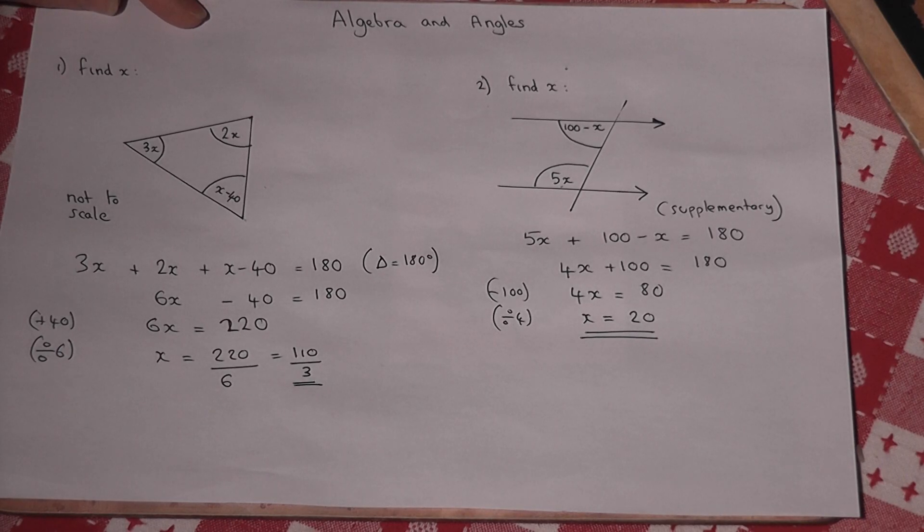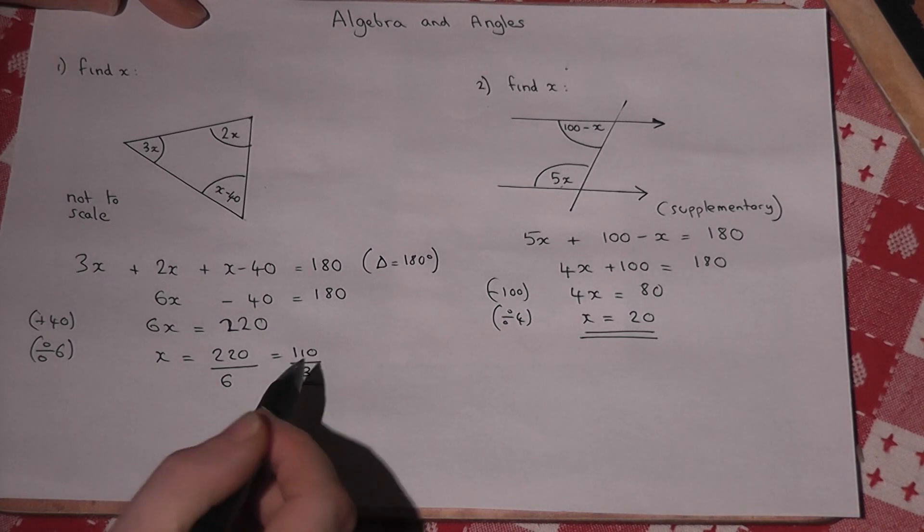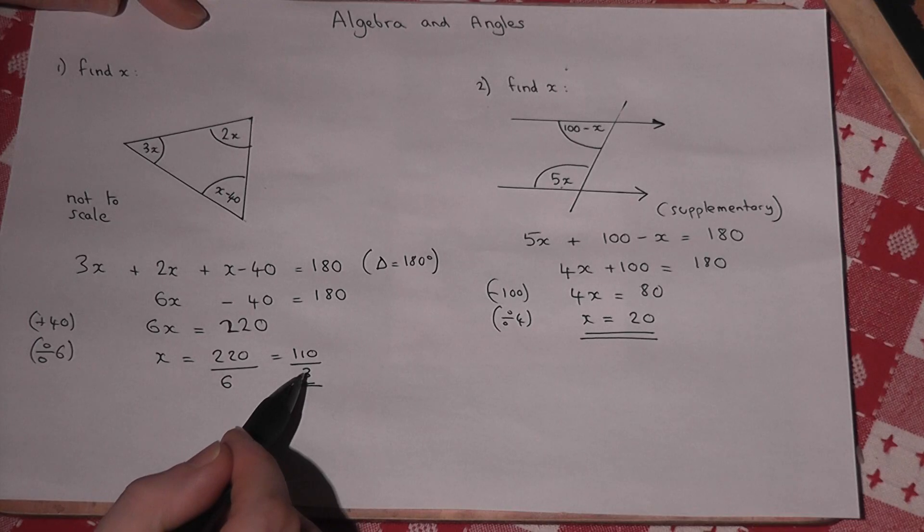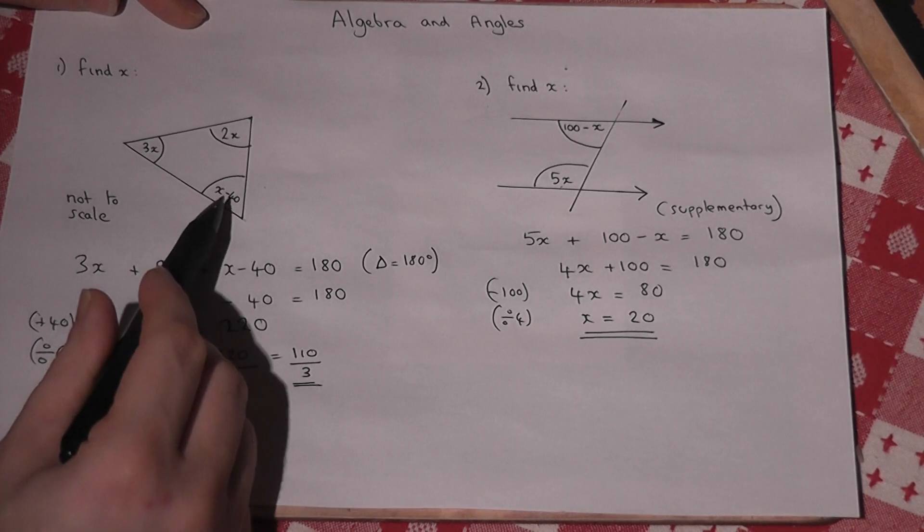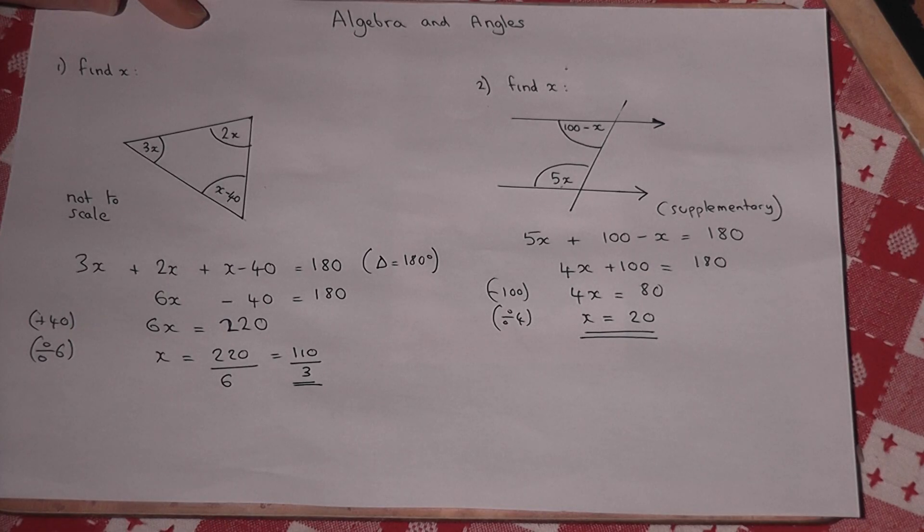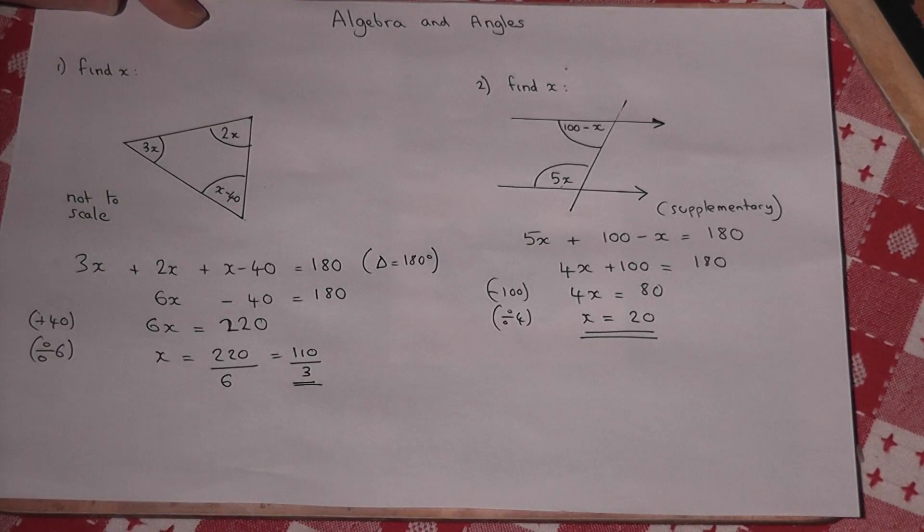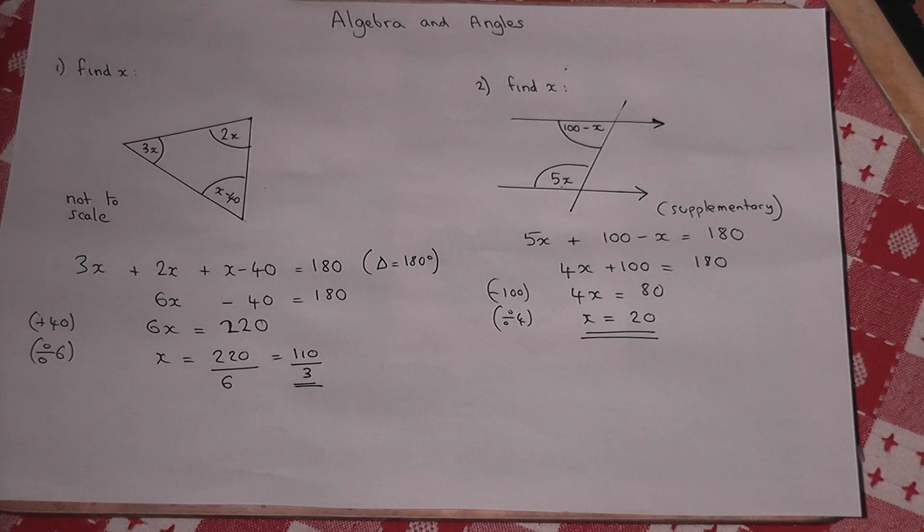Now just a quick comment. Those of you who are eagle-eyed would have recognized that this answer here is actually less than 40, which produces a negative angle here in the triangle. This was just an example made up on the spot to explain the technique. In the exam, of course, you get valid angles with the actual triangle itself.